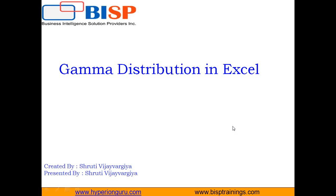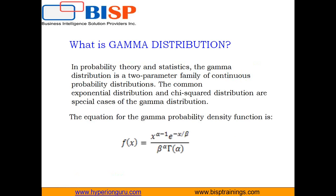Hello everyone, I am Shruti Vijayargi from BISP Solution. In this video I am going to explain you about the gamma distribution in Excel. In probability theory and statistics, the gamma distribution is a two-parameter family of continuous probability distributions. The common exponential distribution and chi-squared distribution are special cases of the gamma distribution.